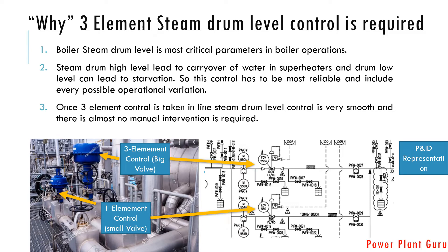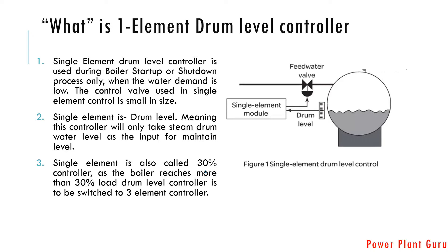To maintain boiler drum level thoroughly, we need three-element level control. First of all, the conventional steam drum level system uses only single-element level control, and that single element is drum level.